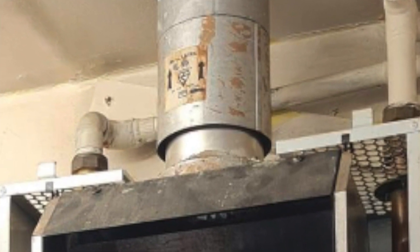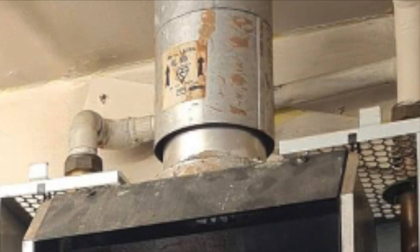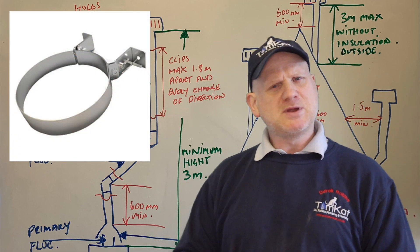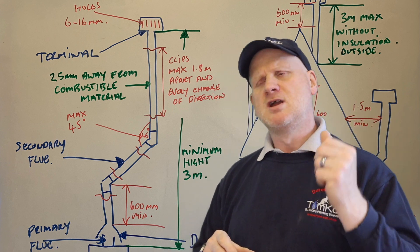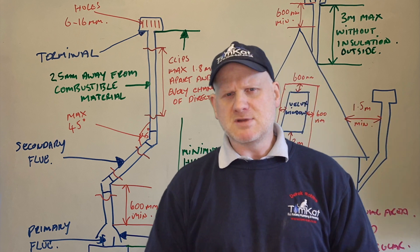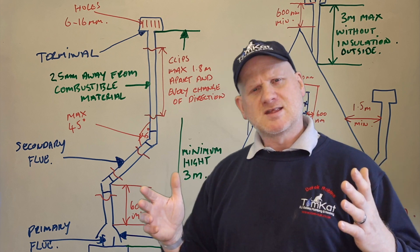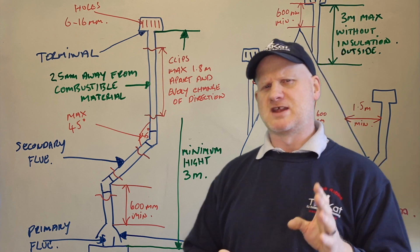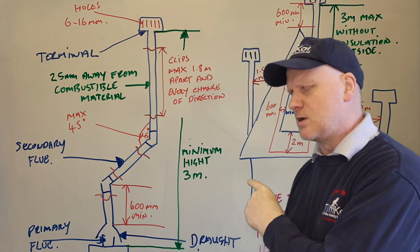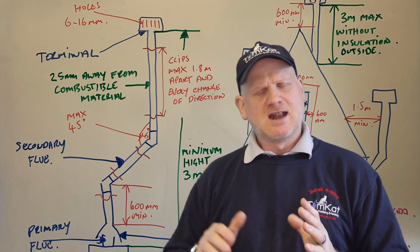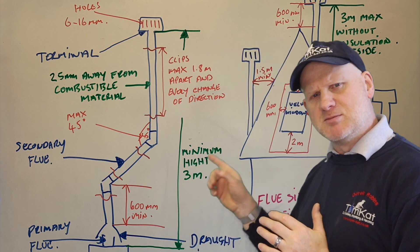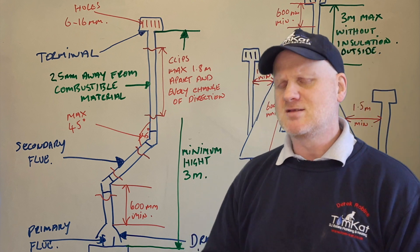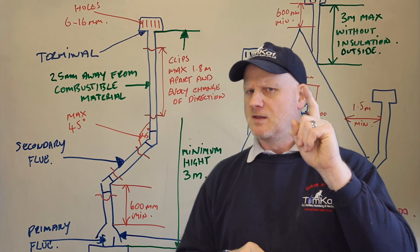You must follow the arrows on the flue system so you don't install it upside down. The maximum clipping distance is at every change of direction and no more than 1.8 meters apart — though many condensing boilers specify a maximum of one meter, so check manufacturer's instructions. The minimum height for an open flue appliance is three meters.